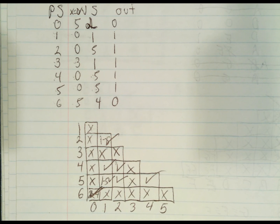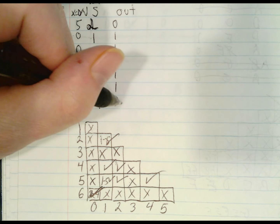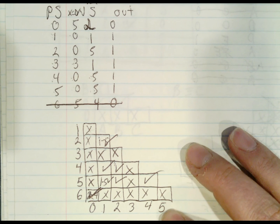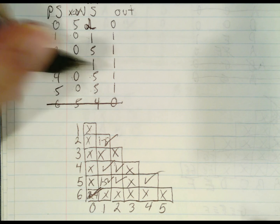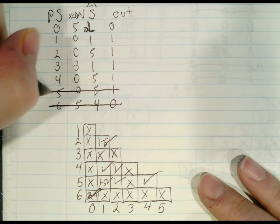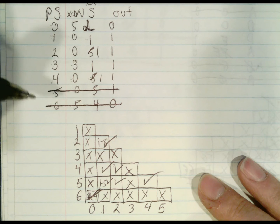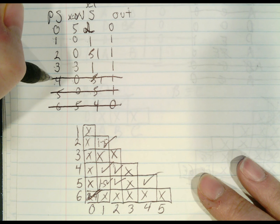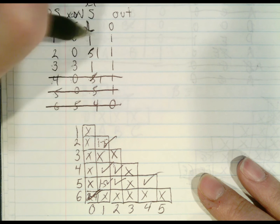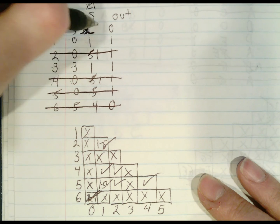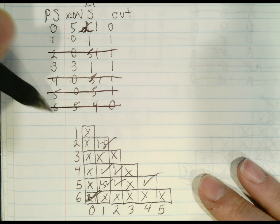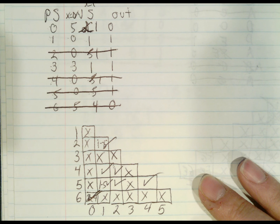So what we have now is: zero is equivalent to six, so anytime I see a six I can strike it out and write in zero. Five is equivalent to one, so I can remove five and write in one. Four is equivalent to one, so I can remove four. Two is equivalent to one, so I can remove two. And now I have my reduced finite state machine. We've gone down from seven rows to just three rows for an equivalent finite state machine. Thank you.